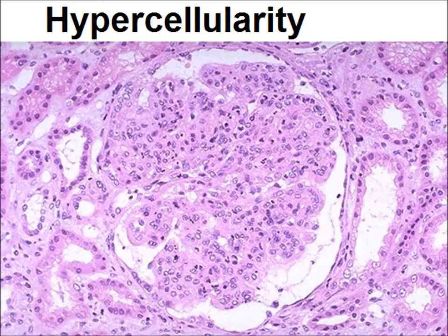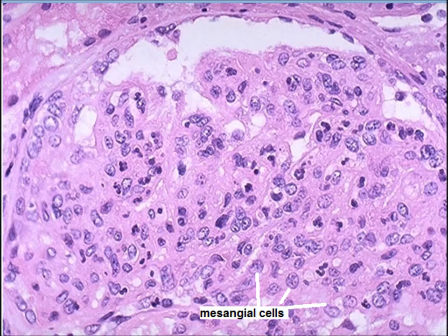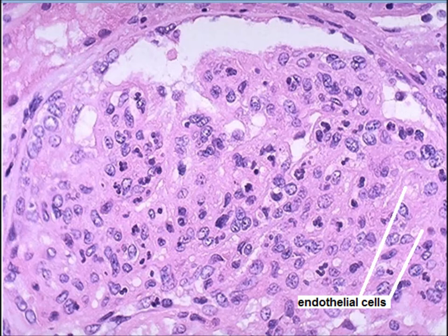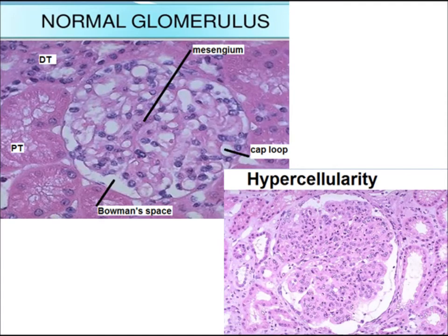The glomeruli may have hypercellularity. You can appreciate neutrophils — the multi-lobed nuclei of the neutrophils — and numerous nuclei in the glomerulus. There is also mesangial cell proliferation; mesangial cells are actually macrophages. There is also proliferation of the endothelial cells. So hypercellularity can be due to leukocyte infiltrate, epithelial cell proliferation, or endothelial cell or mesangial cell proliferation.